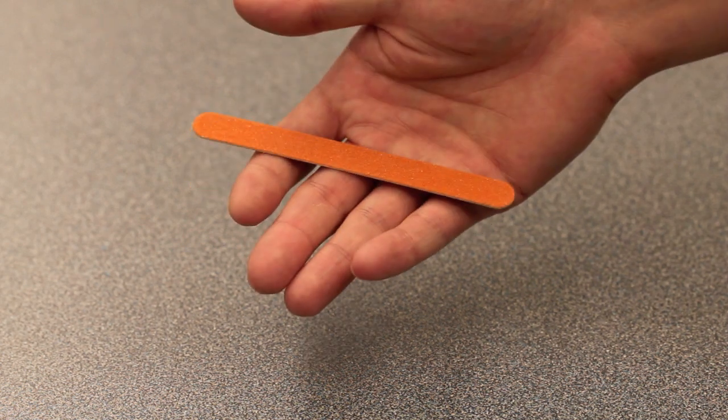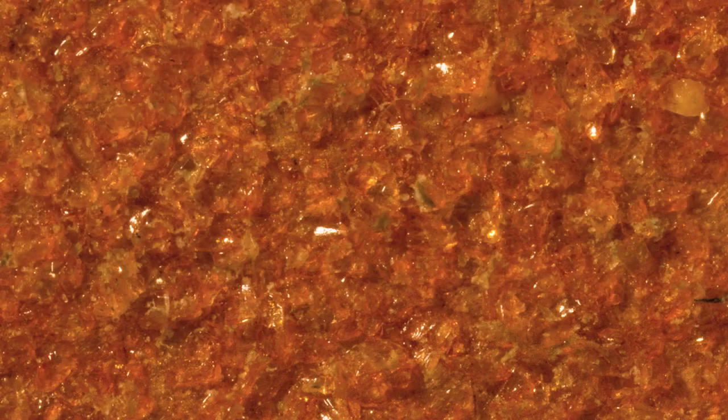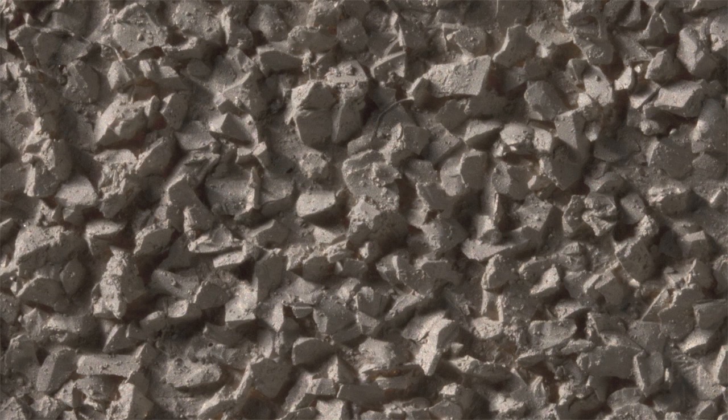To understand how Gelsite facilitates microgeometry capture, let's look at the surface of an emery board. Up close, the crystals on the emery board are transparent and difficult to see individually. Using a diffuse Gelsite sensor, the same surface appears as a rocky landscape and its structure is much easier to understand.